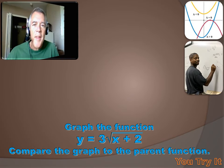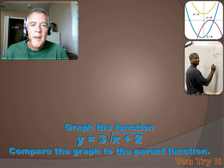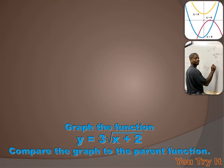Now you try this one. Hit the pause button, do the problem, and then hit the forward key to move on to the answer. We're asked to graph the function y equals 3 times the square root of x plus 2, and then compare that graph to the parent square root function.